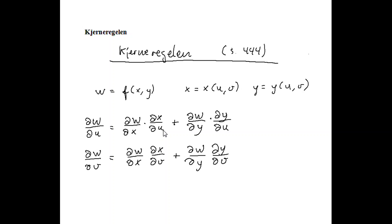If we only had one variable, this would be the result, but now we have two variables, so we have to add this term: the derivative of w with respect to y multiplied with the partial derivative of y with respect to u. We get a similar expression for the partial derivative of w with respect to v in this form.